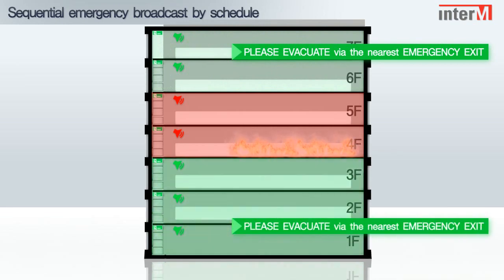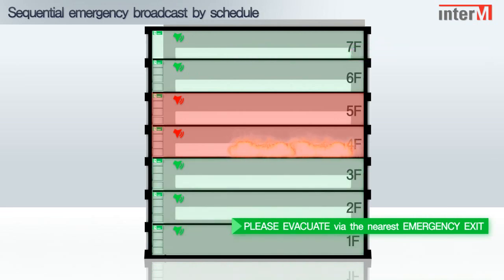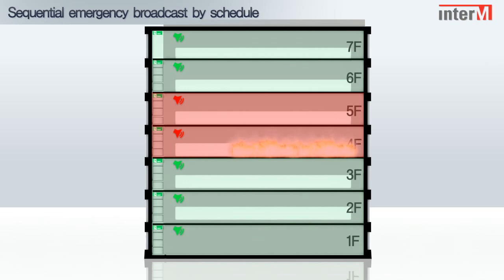In an emergency scenario, the 6000 system will initiate sequenced and controlled alerts, ensuring a safe and structured evacuation.